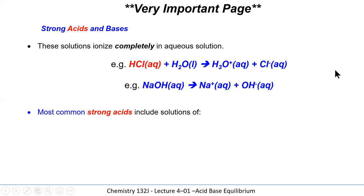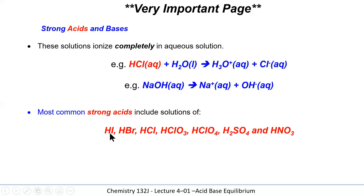The most common strong acids are: hydrochloric acid (HCl), hydrobromic acid (HBr), hydroiodic acid (HI), chloric acid (HClO₃), perchloric acid (HClO₄), sulfuric acid (H₂SO₄), and nitric acid (HNO₃) — seven strong acids in total. Any other acid is a weak acid. If you remember these seven, you know all weak acids, of which there are literally thousands.